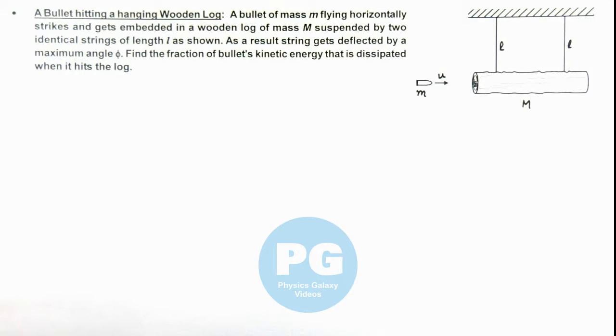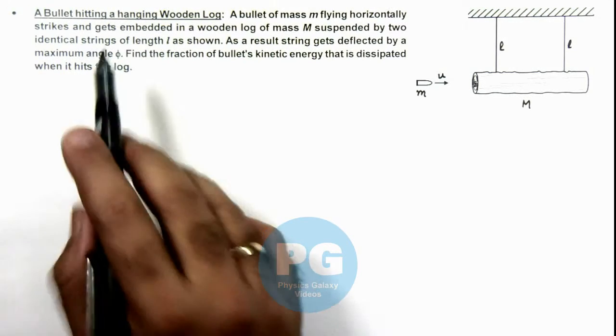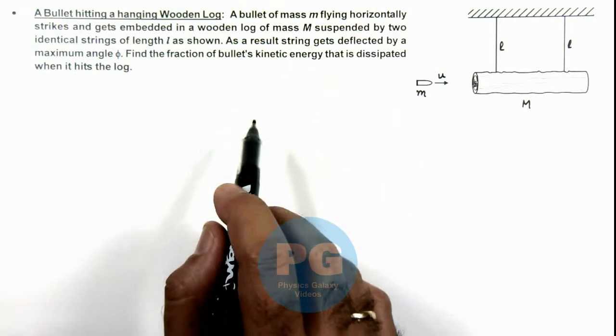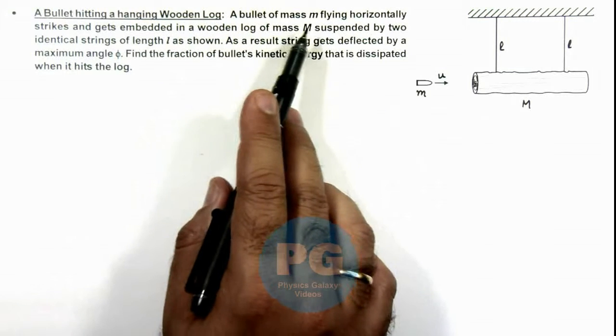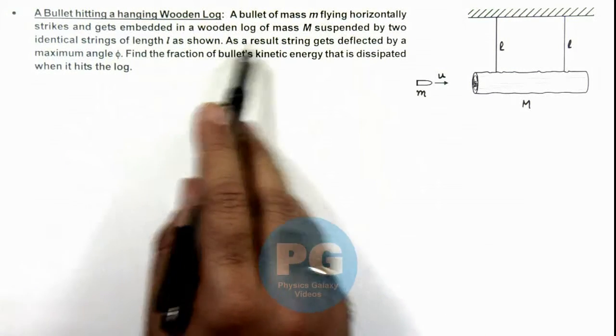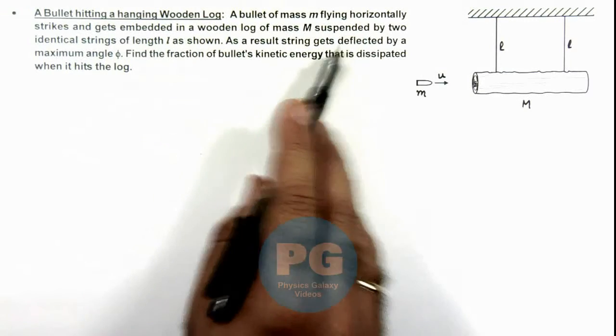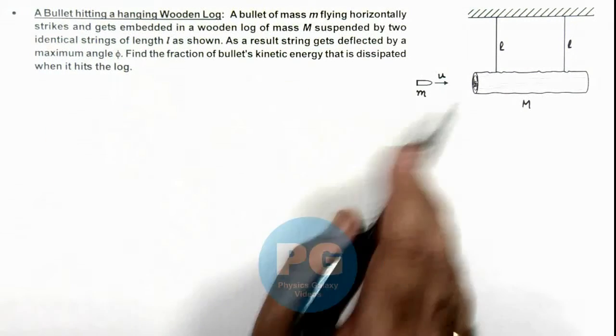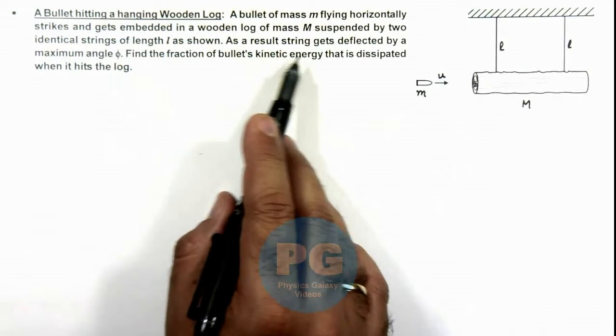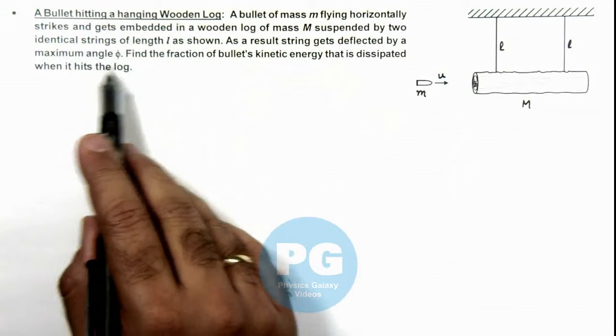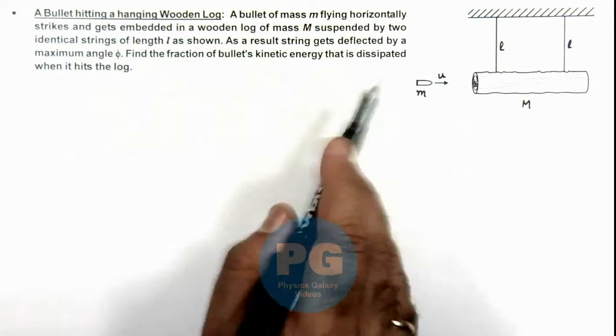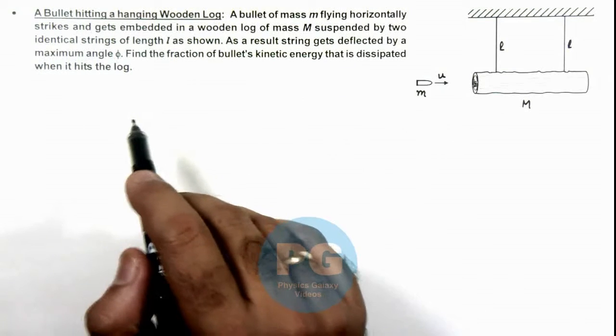In this illustration we'll study a bullet hitting a hanging wooden log. Here you can see the situation where a bullet of mass m flying horizontally strikes and gets embedded in a wooden log of mass M suspended by two identical strings of length l as shown. As a result, the string gets deflected by a maximum angle φ. We are required to find the fraction of the bullet's kinetic energy that is dissipated when it hits the log.